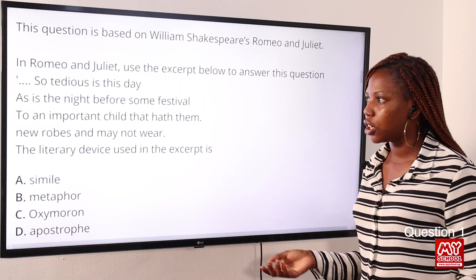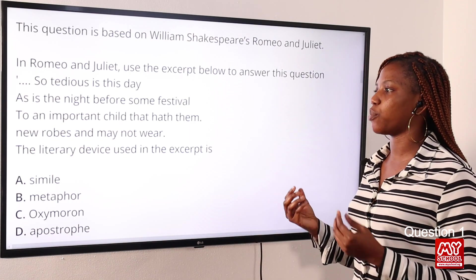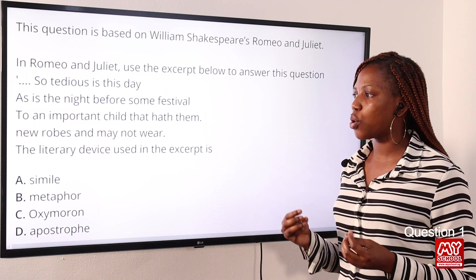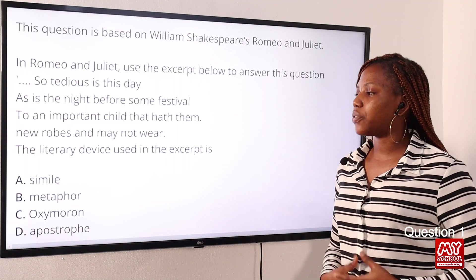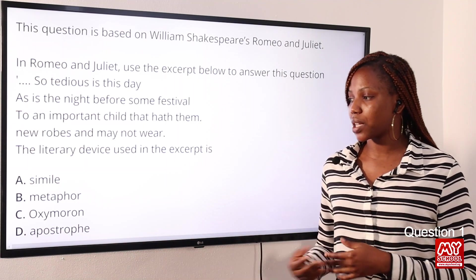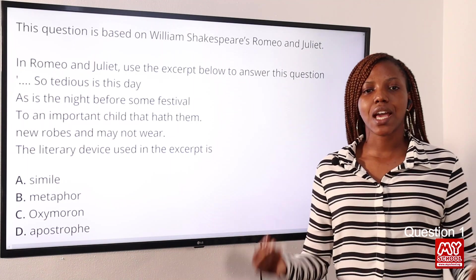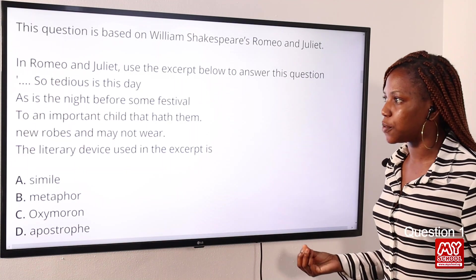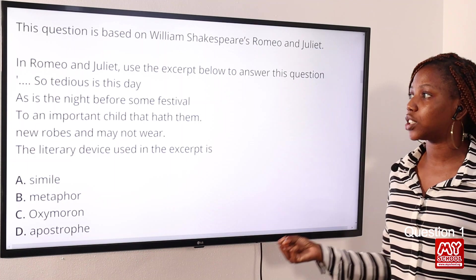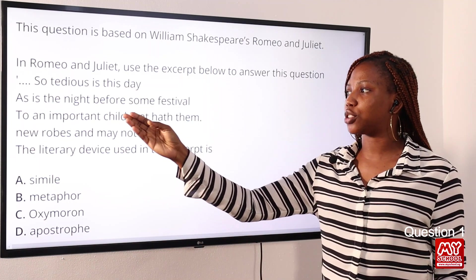The excerpt reads: 'So tedious is this day as is the night before some festival to an impatient child that hath new robes and may not wear them.' What is the literary device used in the excerpt? Option A: simile, Option B: metaphor, Option C: oxymoron, Option D: apostrophe. The answer to this question is simile.